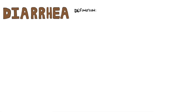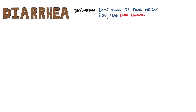Diarrhea is defined as having stools that occur more than 3 times a day and are looser than usual. Specifically, 200 grams in 24 hours is considered diagnostic. But as you can imagine, trying to measure the weight of stools in everyone referring diarrhea would be a mess. Literally.